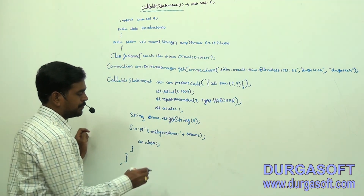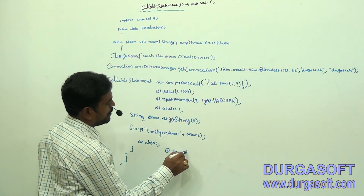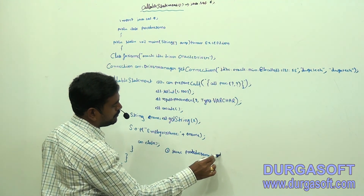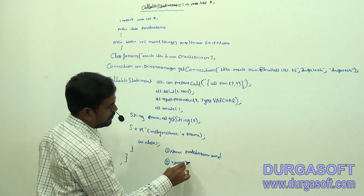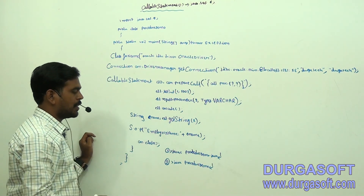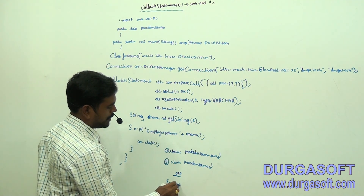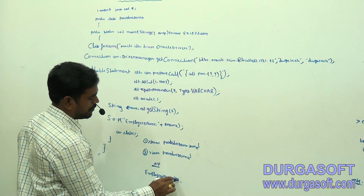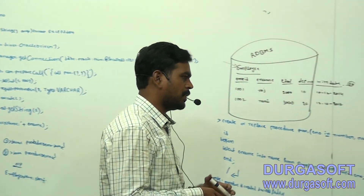Now we can compile and execute. To compile: javac ProcedureDemo.java. Compilation is done. After that, execute: java ProcedureDemo. Press Enter, then automatically we will get the output. The output is Employee Name: Nani. Now we will see this example practically.